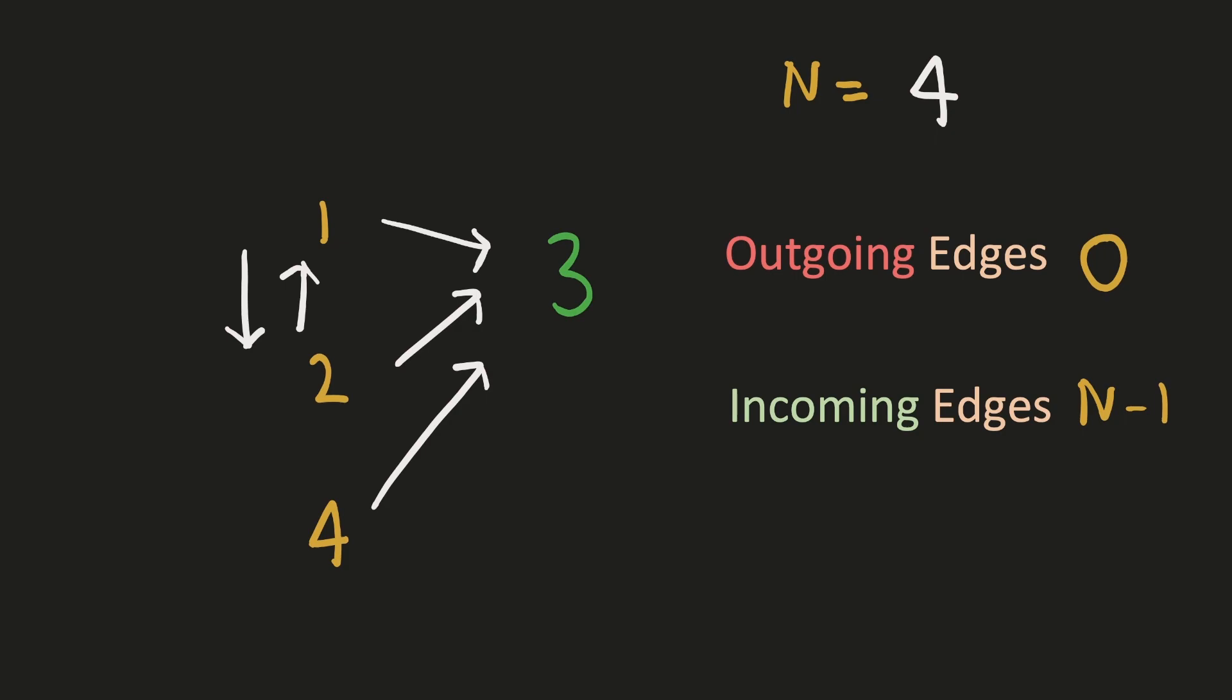In general, if we have n people in the town, all the remaining n-1 people will trust the judge, so the number of incoming edges will be n-1. So if we consider person 3 as a vertex in this graph, using these two values its degree will be n-1.